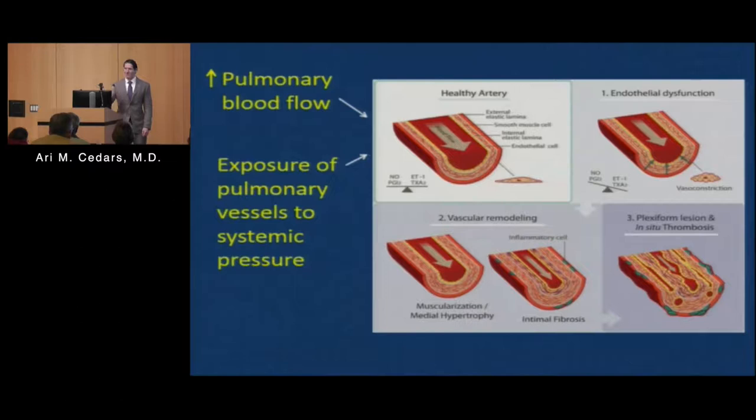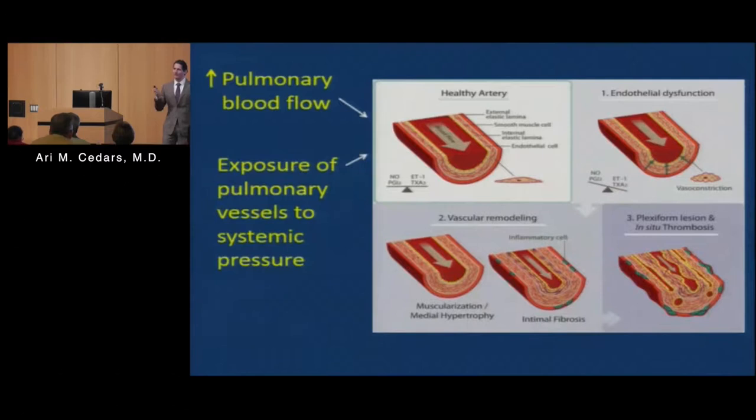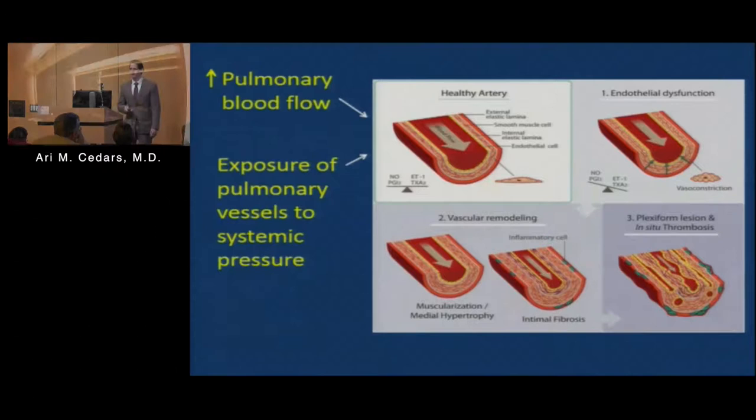One more bit of bad news: even after you remove the pathological stimulus — even after your heart defect has been repaired and you're no longer having elevated levels of blood flow or elevated pressures in your lungs — you still have a risk of developing pulmonary hypertension. Certain genetically susceptible people, 20 years after a heart defect is repaired, will have their first episode of decompensation as a result of pulmonary hypertension.